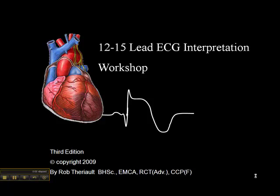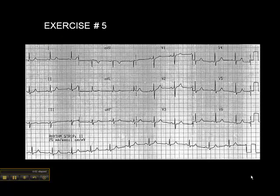We're on exercise 5 on page 43, and we'll go through the ECG from left to right. There's no ST elevation in lead 2, no ST elevation in lead 3, and no ST elevation in AVF, so we can rule out inferior wall MI.